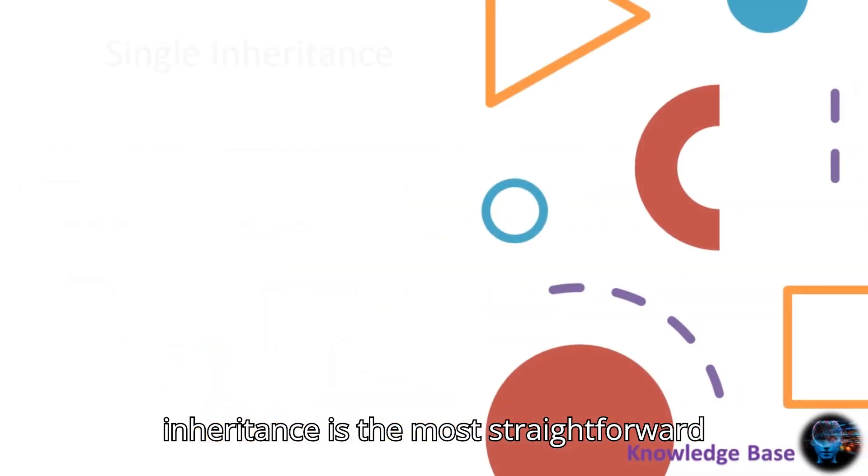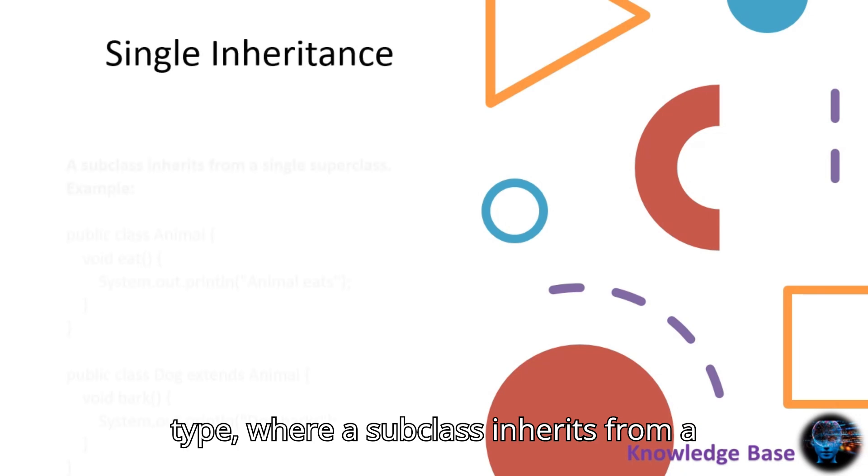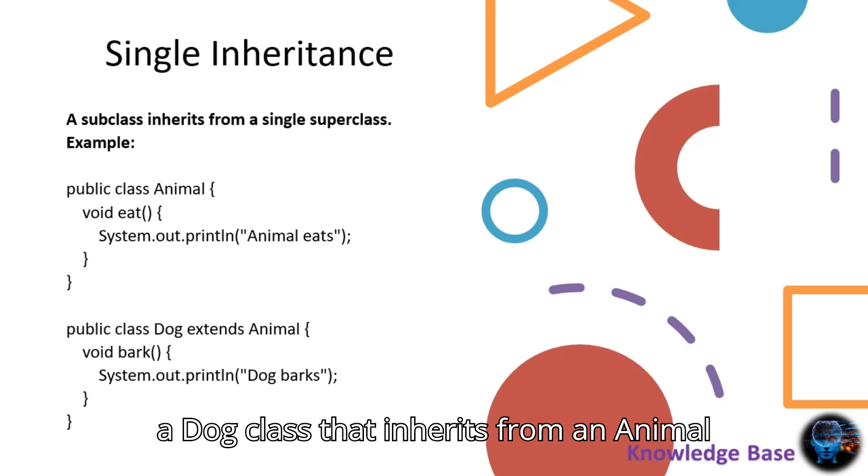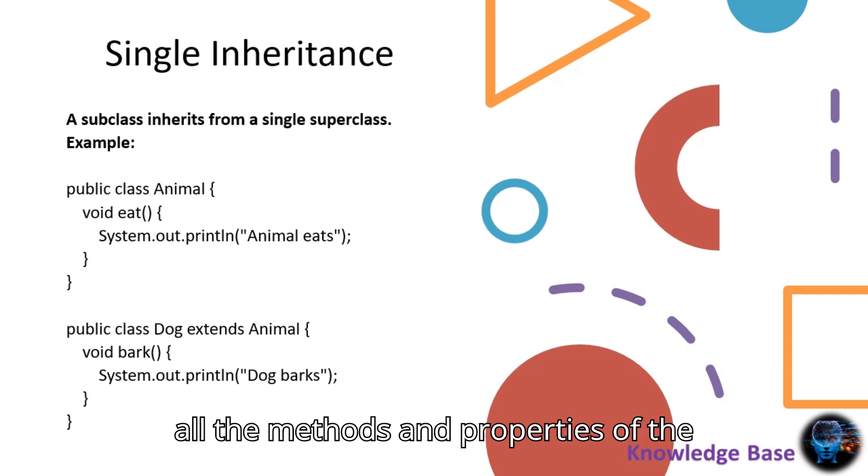Single inheritance is the most straightforward type, where a subclass inherits from a single superclass. For example, consider a dog class that inherits from an animal class. The dog class will have access to all the methods and properties of the animal class.